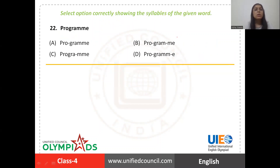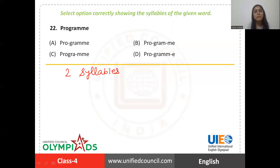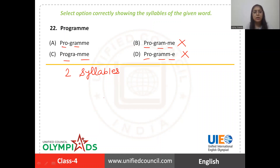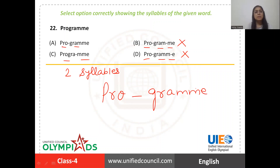Question number 22. We have to select the option which correctly shows the syllables of the given word 'programme'. There are two syllables in this word. Options with three syllables can be clearly ruled out. Among the two-syllable options, the correct one spells P-R-O-G-R-A-M-M-E split into two syllables. These are the right syllables, so definitely Option A is the right answer.